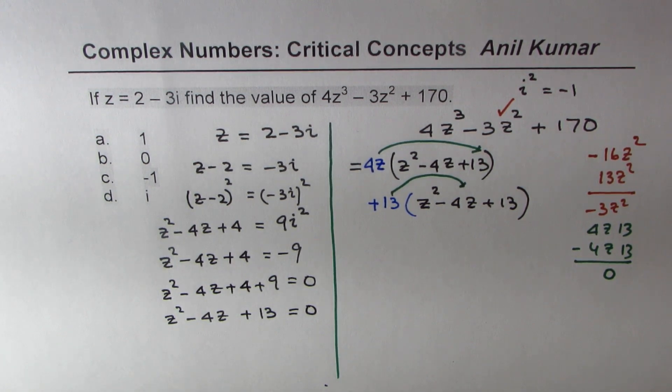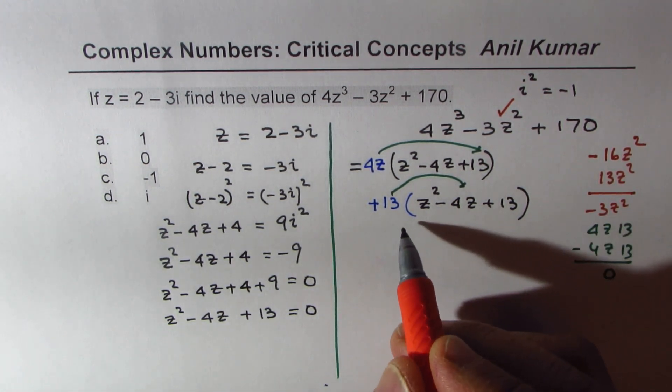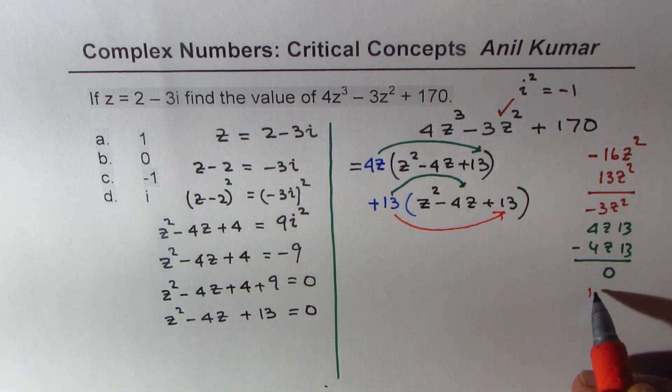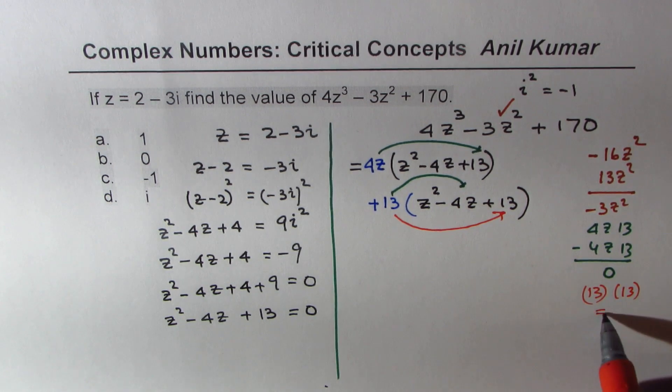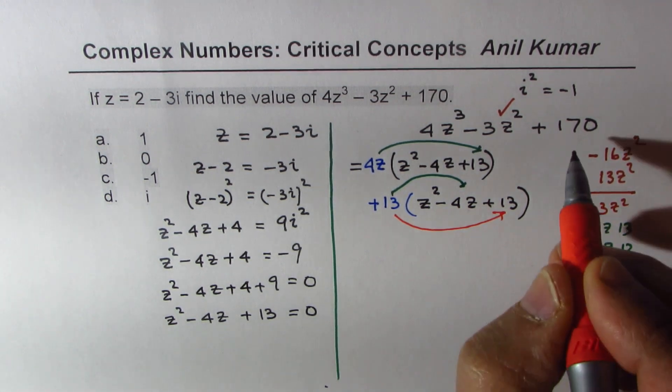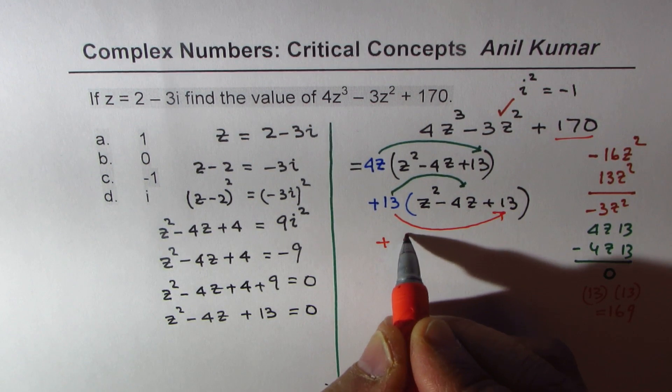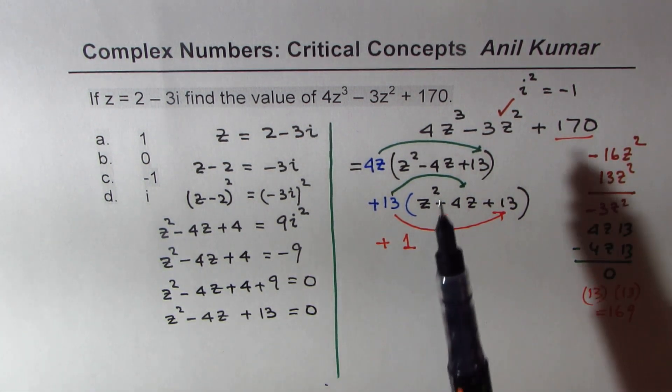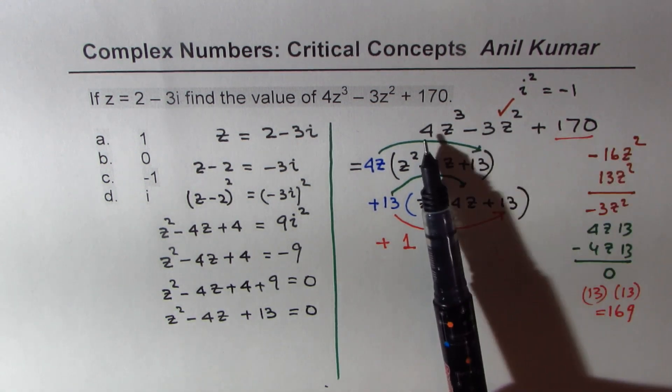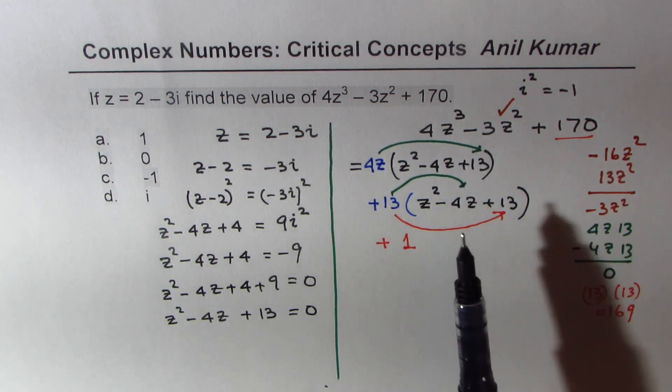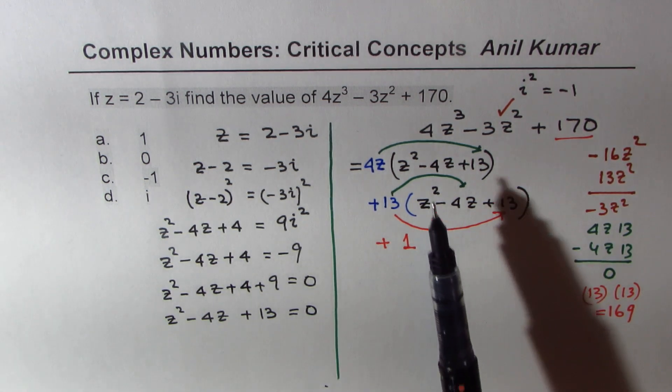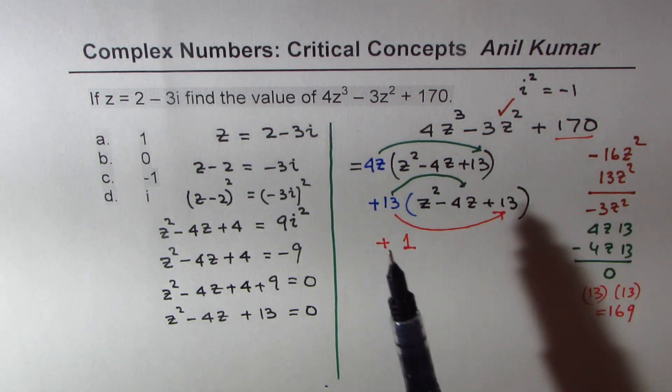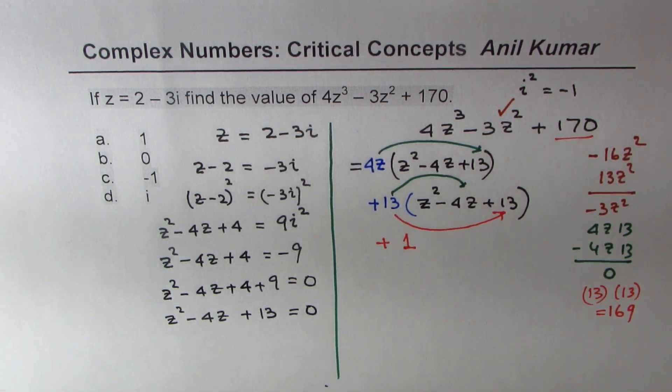But there is one number which doesn't match, which is 13 times 13 is 169. So 13 times 13 equals 169, but we need 170. So what I can do is add 1 to this. Do you see that part? So if you look into it, we have written our polynomial 4z³ - 3z² + 170 as sum of these three polynomials: 4z times something 0, 13 times something 0. What we know here is that this is 0.